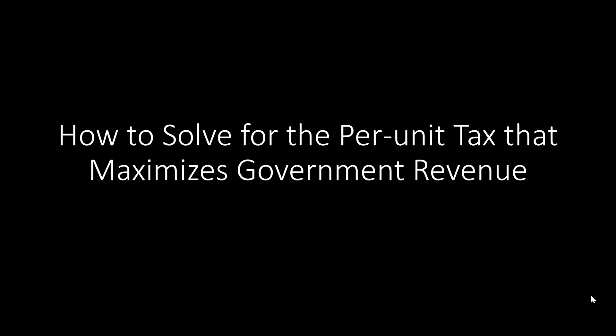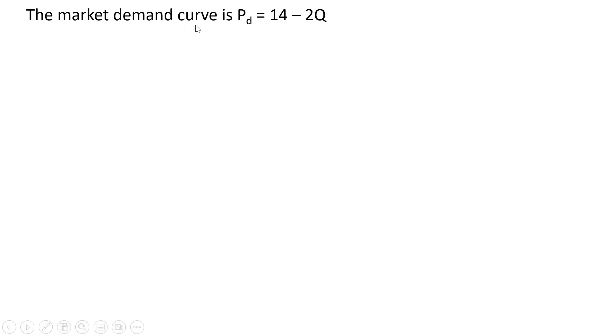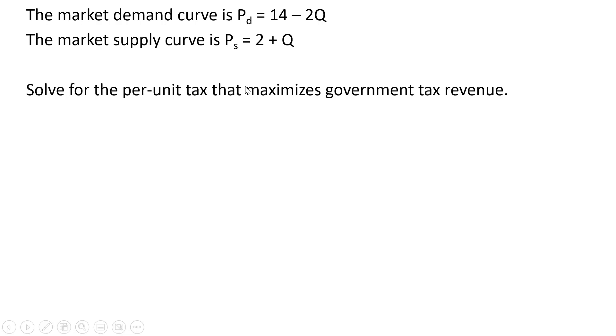Hello, in this video we're going to solve for the per-unit tax that maximizes government tax revenue. The market demand curve is given by Pd = 14 - 2Q, and we have the market supply curve Ps = 2 + Q. We want to solve for the per-unit tax that maximizes government tax revenue.